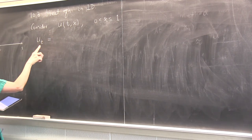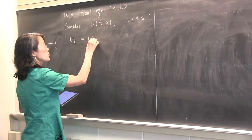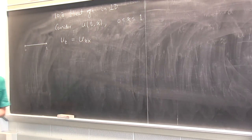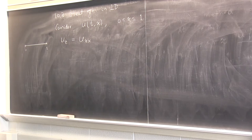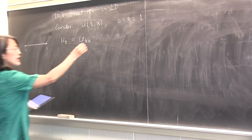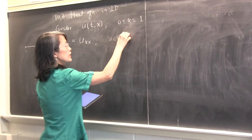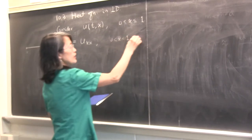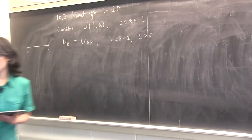So U sub T, the time derivative, equals the second derivative in space. I write U_xx — differentiate x twice. And this holds for x inside the domain, and for T greater than zero.